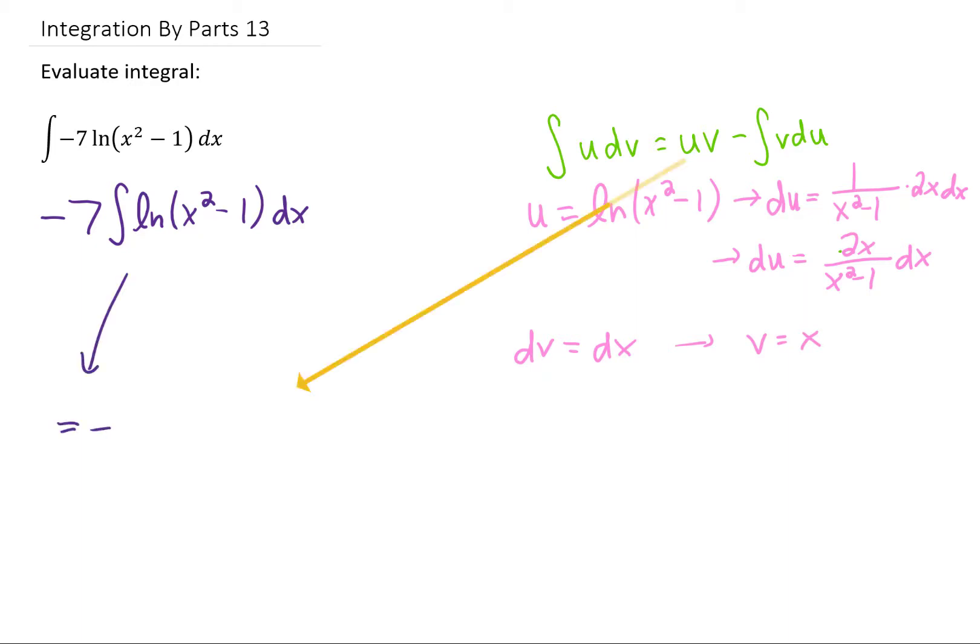Then rewriting our original integral using the integration by parts formula gives us u times v minus the integral of v du. All right, we can simplify that integrand that we have left just a little bit.